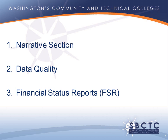The second is the data quality section. In this section, you will rate your program in four areas based on acceptable, superior, or exemplary data collection. Finally, you will fill out the financial status reports for your basic and EL Civics grants. These reports are to be signed, scanned, and uploaded as an attachment in OGMS, with the originals kept on file at your agency.